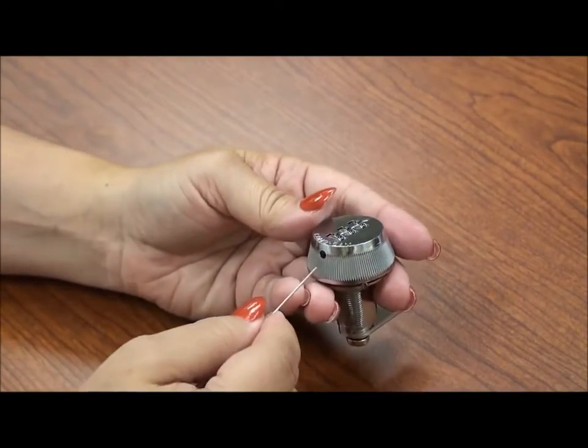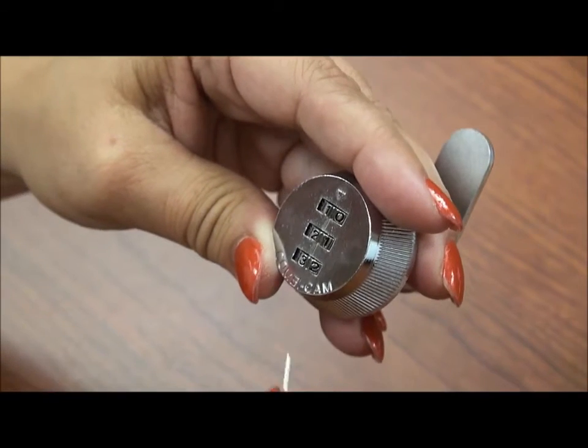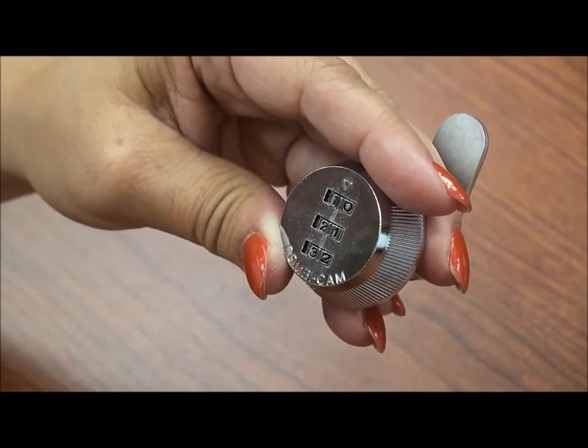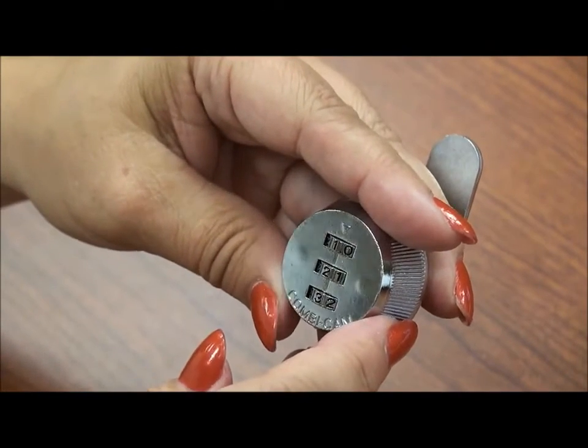Before setting the combination, confirm the setting by putting your thumb and forefinger on the flat sides of the lock and turning the lock.